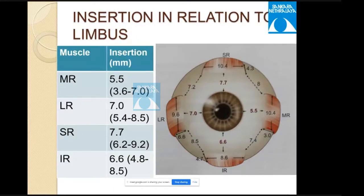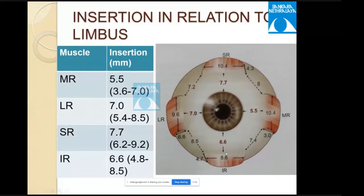The insertion distances of the recti from the limbus are: medial rectus 5.5 mm, lateral rectus 7 mm, superior rectus 7.7 mm, and inferior rectus 6.6 mm.